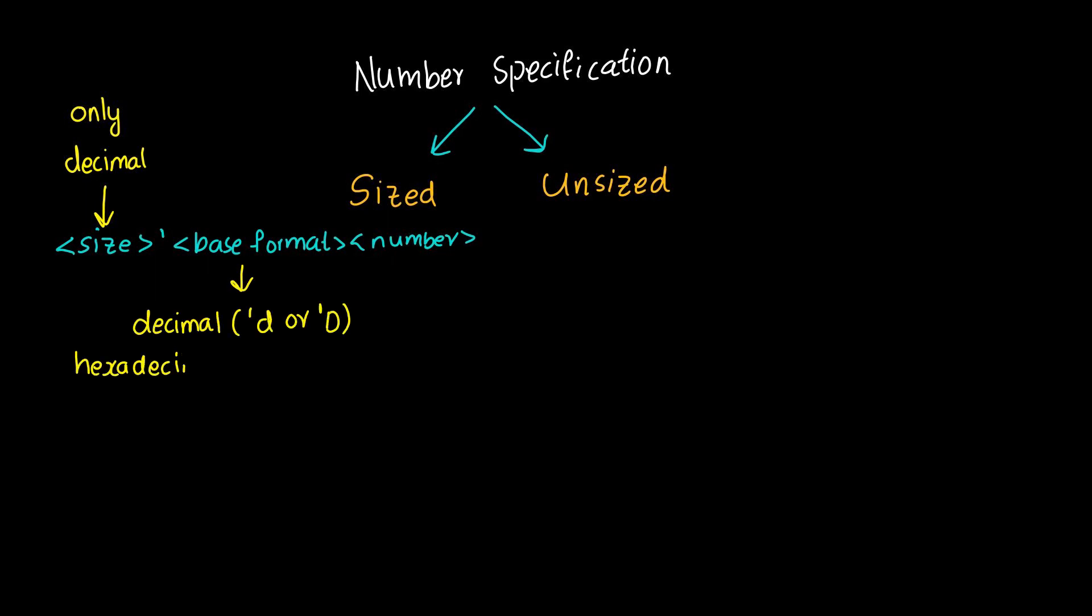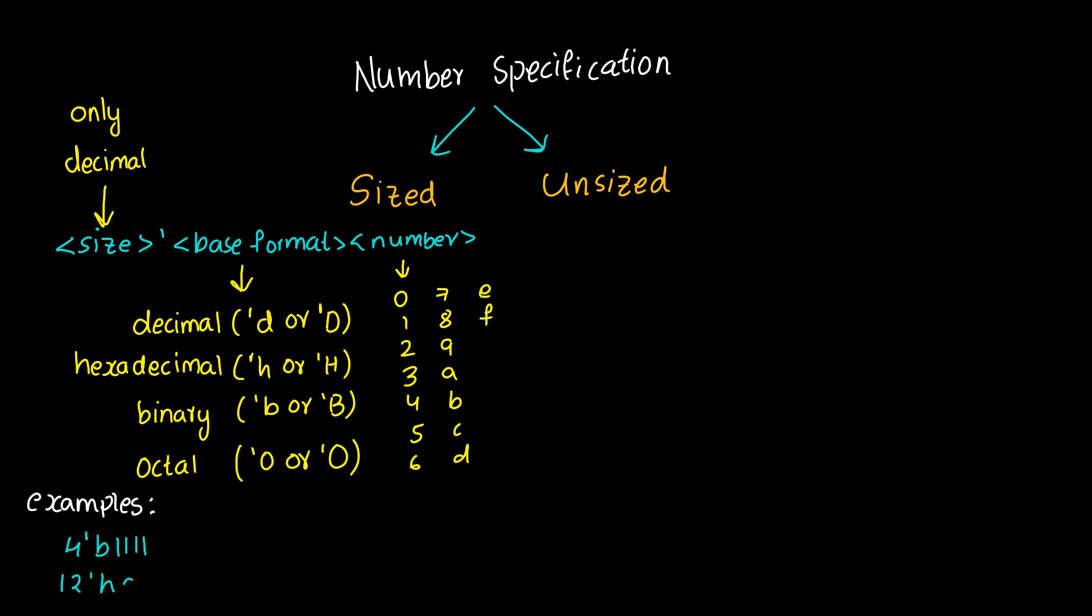Legal base formats are decimal, hexadecimal, binary, and octal. The number is specified as consecutive digits from 0 through 9, and A through F. Only a subset of these digits is legal for a particular base. Uppercase letters are legal for number specification.